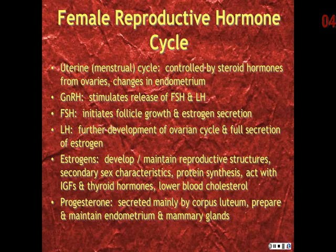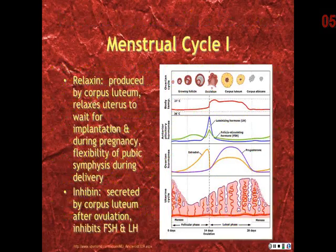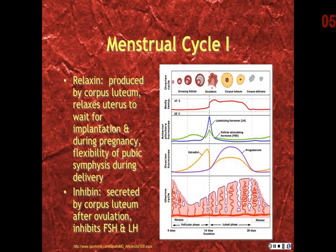Progesterone is secreted mainly by the corpus luteum and helps to prepare and maintain the endometrium for the released ovum, as well as the mammary glands. Relaxin, produced by the corpus luteum during the monthly cycle, relaxes the uterus to help with implantation, and during pregnancy increases flexibility of the joints, especially the pubic symphysis, for delivery. Inhibin is secreted by the corpus luteum immediately after ovulation to inhibit the secretion of FSH and LH, preventing more than one ovum from being released at a time.